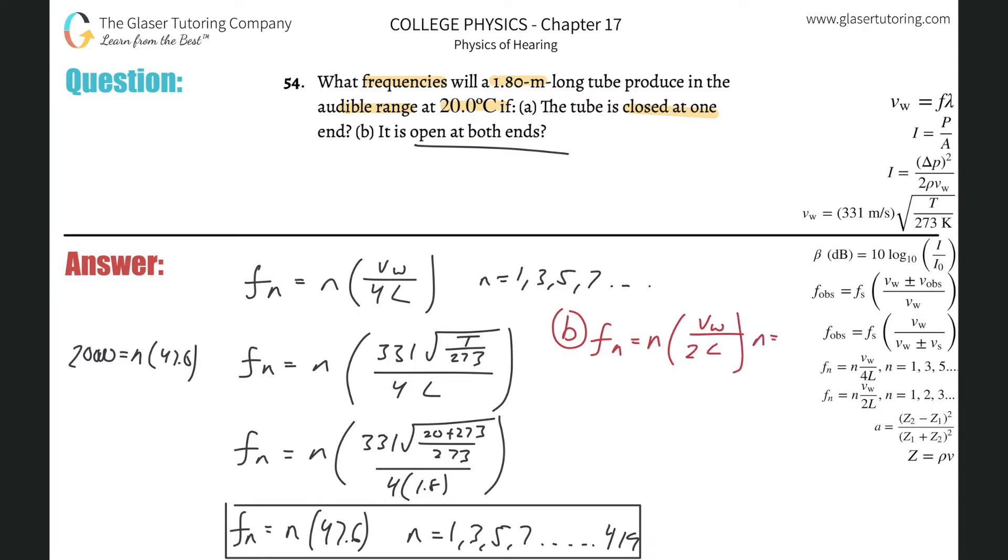So here, let's just simplify this. Let's plug in the values. We know we're going to basically have to plug in this exact numerator again, right? So that's 331 times 20 plus 273, all over 273, all divided now by 2 times the length of 1.8. And what do we get now?